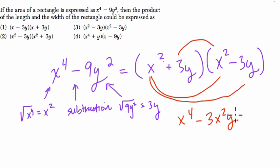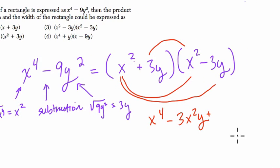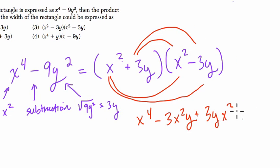And here, this opposite is also plus 3yx squared. These are equal opposite terms. And then 3y times negative 3y is negative 9y squared.